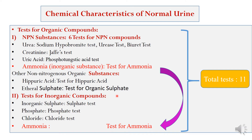In an exam, you may be given a simple question to find out the normal constituents of urine, in which you have to do all 11 tests. If you are asked to carry out the test for NPN substances present in normal urine, you have to carry out six tests — three tests for urea, one for creatinine, one for uric acid, and one for ammonia. So depending upon the question, you have to perform the tests.